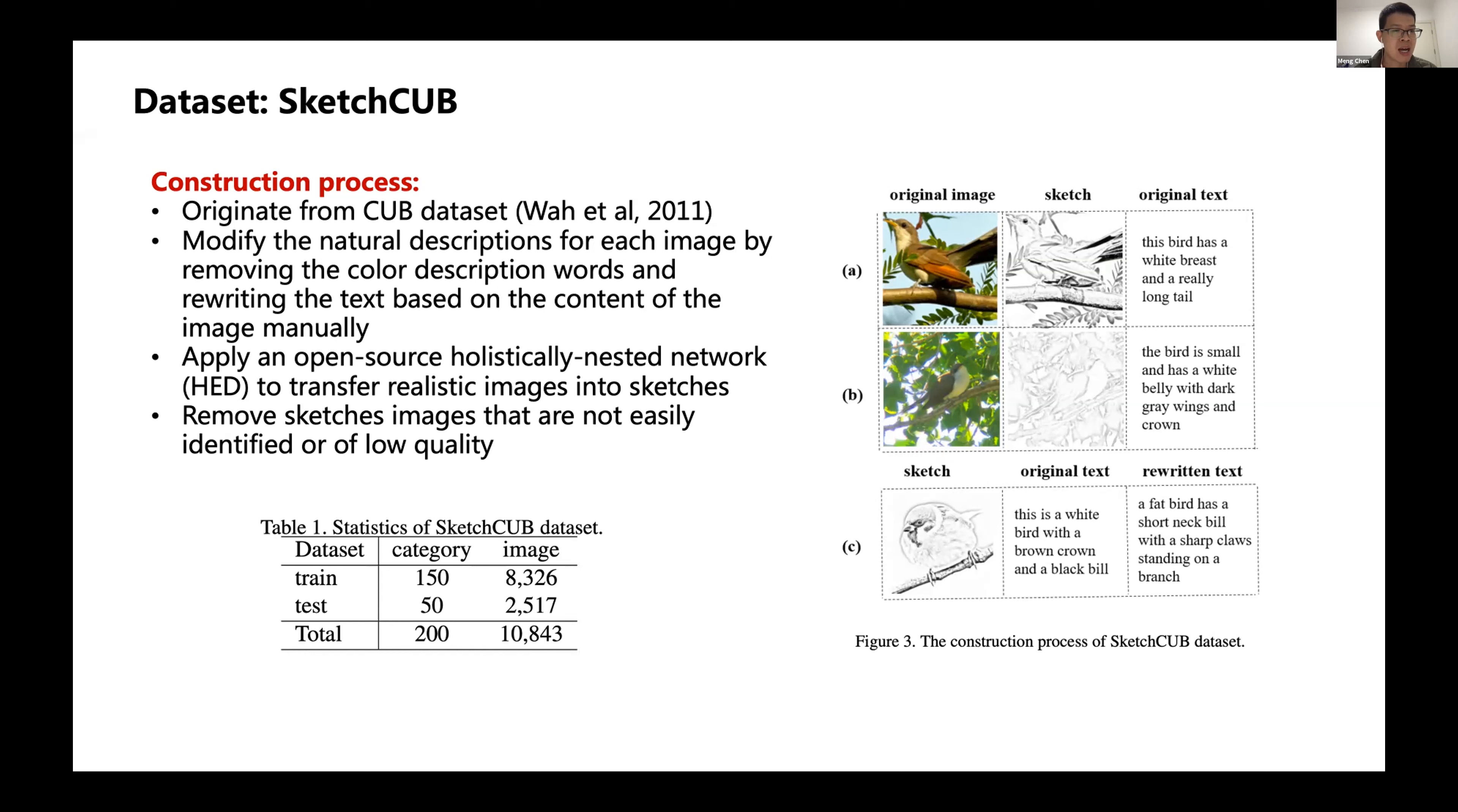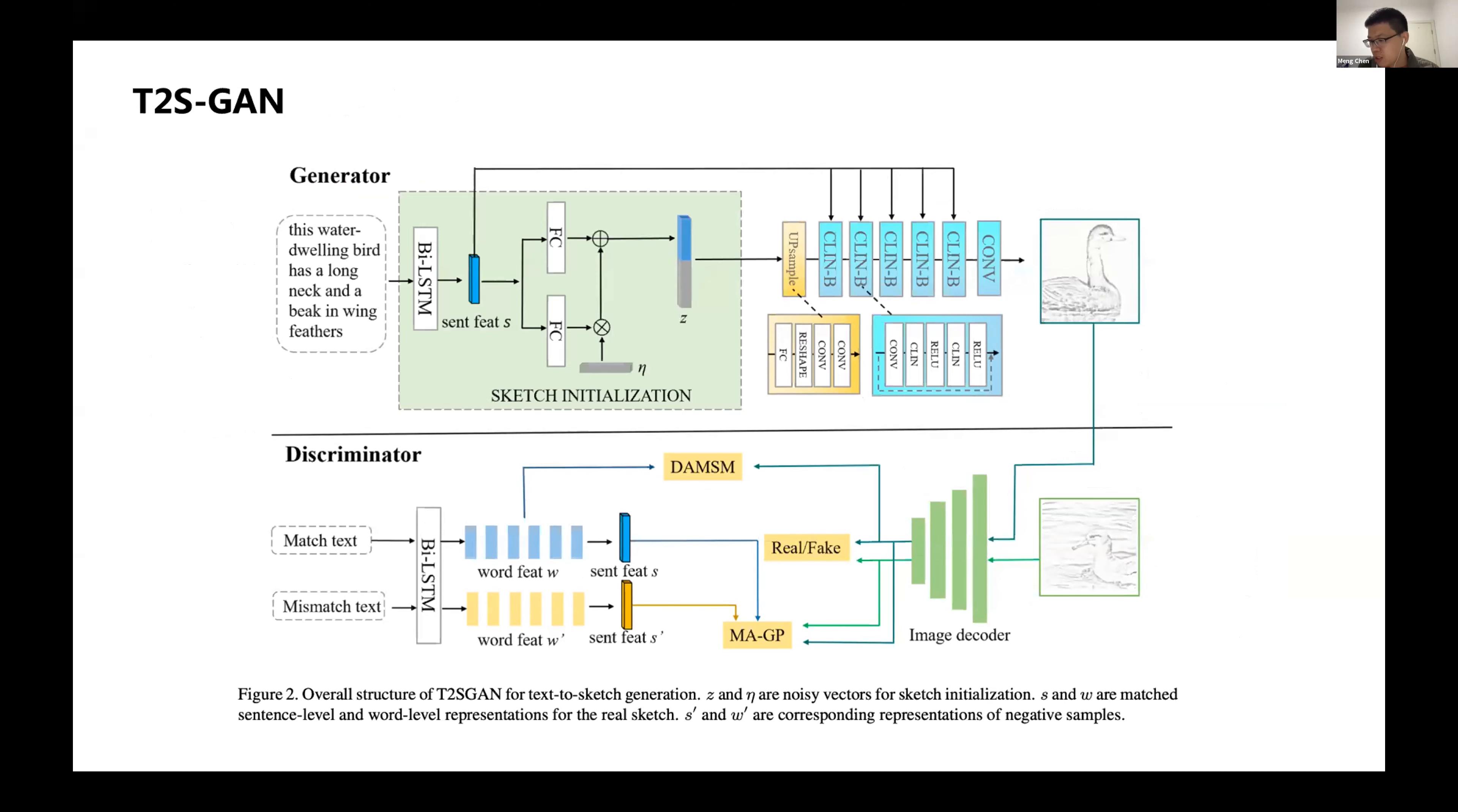We modified the natural descriptions for each image by removing the color description words and rewriting some text based on the content of the image manually. As the right side shows, for example C, we manually rewrote some of the text. We invited 15 annotators to finish the job. Then we applied an open-source holistically nested network to transfer the realistic images into sketches. Finally, we removed sketches that are not easily identified or of low quality. This is the statistics of our SketchCUB dataset.